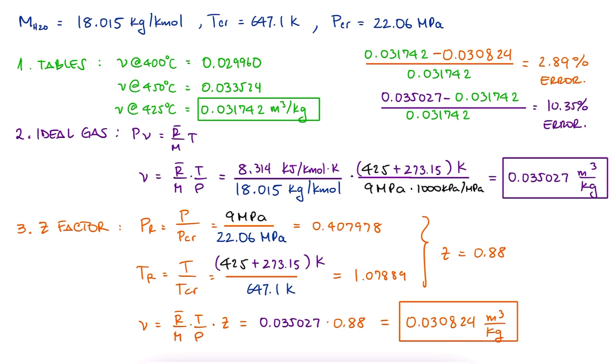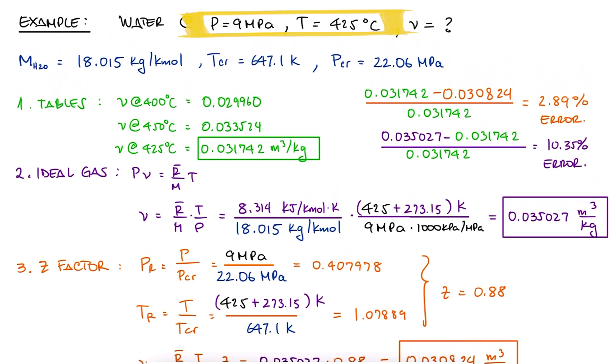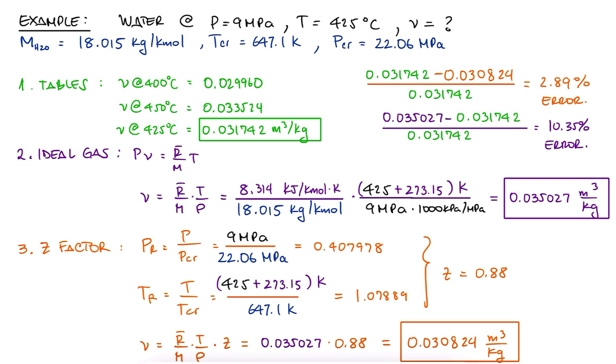We used PR and TR here because those were the two properties that we had. The other charts I mentioned and showed before are used if we have the specific volume. If you want to see how those are used, make sure to check out the links to the other examples in the description below. You'll find the other lectures of the thermodynamics course and other engineering courses there too.